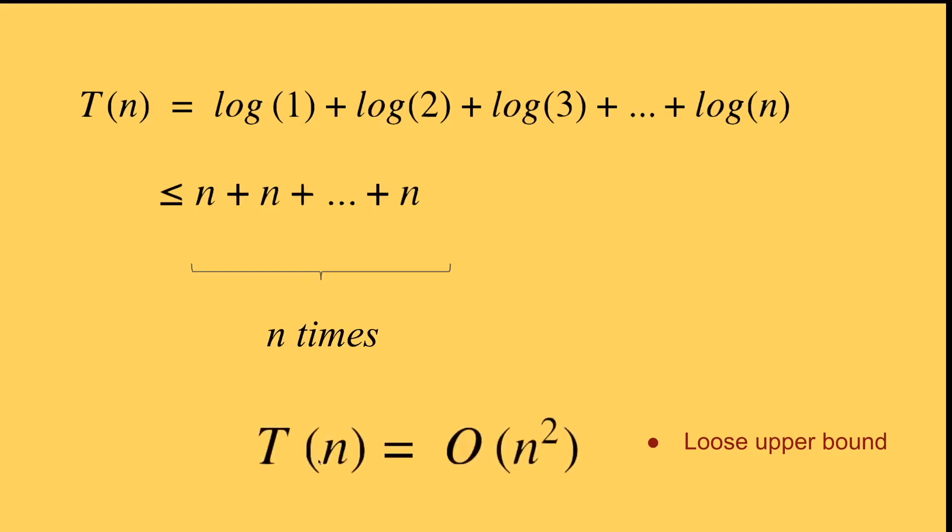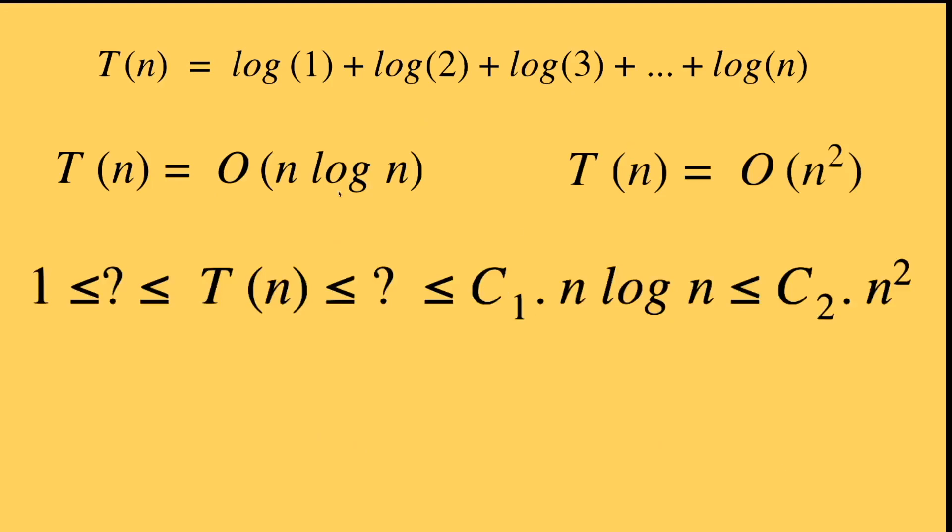Therefore, we could have said T of n is equal to O of n to the power of 2. The problem with this is that this is a loose upper bound. This is still correct. This is a correct relationship. This is a correct runtime analysis. But what we found is a looser upper bound compared to what we previously found, which was O of n log n, which grows slower than O of n to the power of 2.